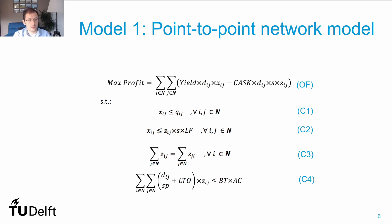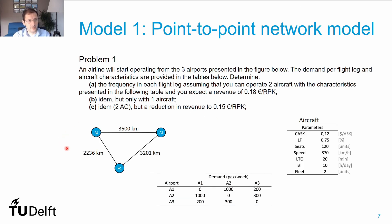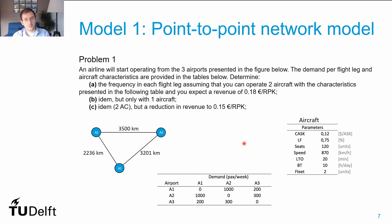To better understand our model, let's see how we can use it to solve a simple problem. We have an airline that operates from three airports. The demand per flight leg and the aircraft characteristics are provided in these tables. I want to solve three problems: the first is to determine the frequency per flight leg assuming we only have two aircrafts and an expected revenue per RPK of 0.18 euros. Then we want to solve the same problem but considering that we only have one aircraft in our fleet. And finally, I want to get back to the case of two aircraft but reduce the revenue to 0.15 euro per RPK.